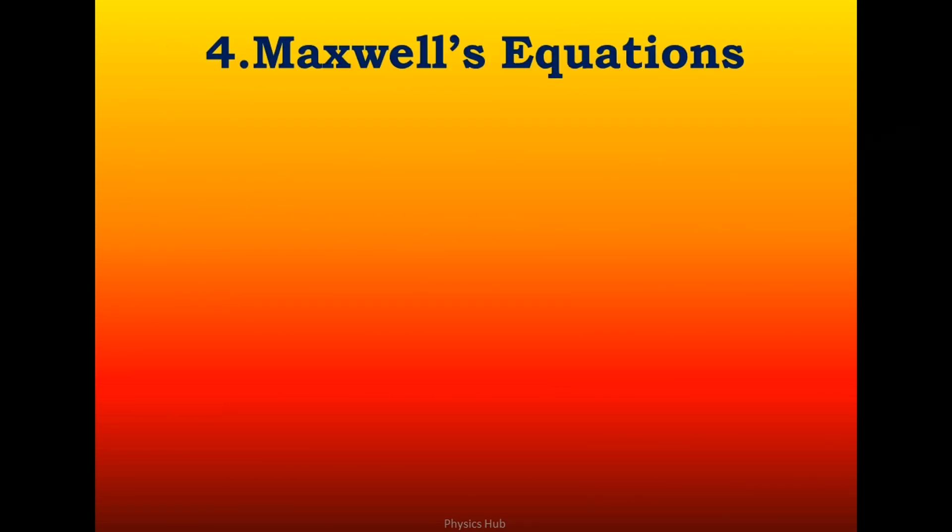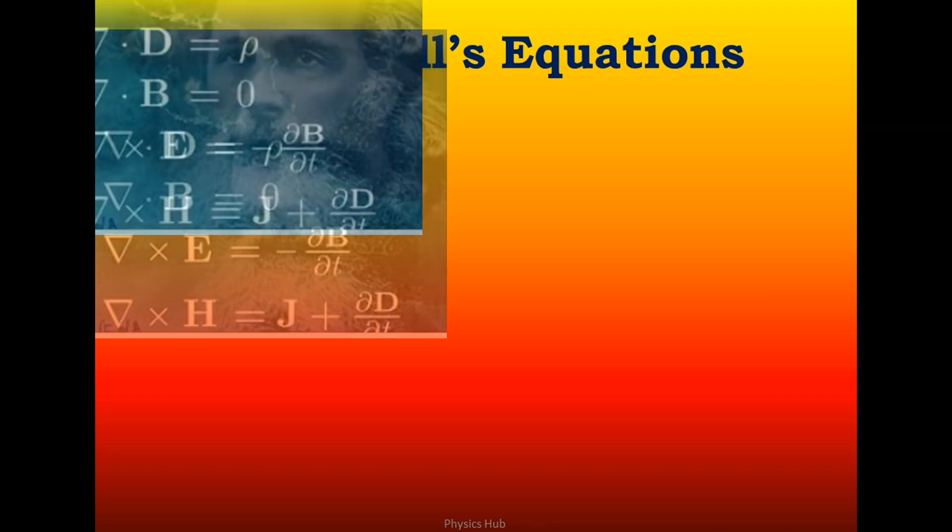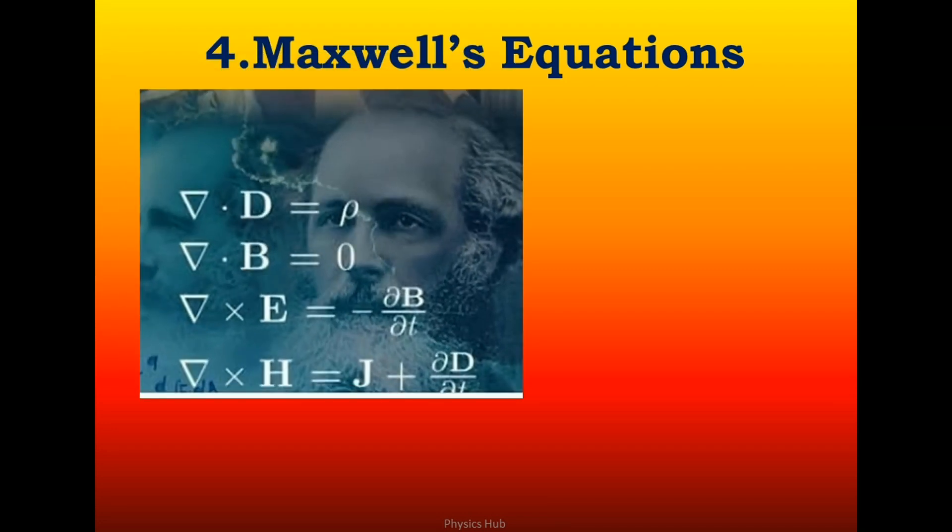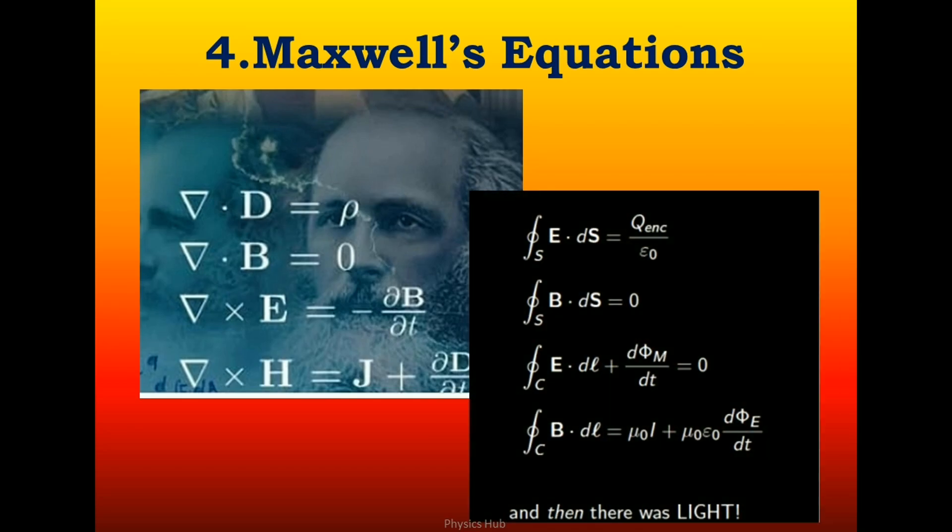The fourth equation is Maxwell's equations. James Clerk Maxwell's set of equations describe how electric and magnetic fields are generated and altered both by each other and by charges and currents. The equations show how electric and magnetic fields propagate at the speed of light. Maxwell first used the equations to propose that light is an electromagnetic phenomenon.